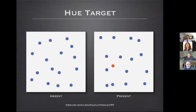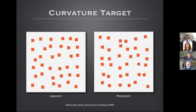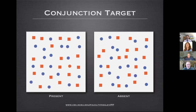Here's a simple example of a hue target—absent on the left, present on the right. If you increase the number of elements, it doesn't get harder to find the target. Here's a curvature target where everything is the same hue, and experiments show it's not only pre-attentive but as easy to detect as the hue target. From a visualization standpoint, you might think: great, I have two visual features—hue and curvature—so I can display two attributes simultaneously. But when you search for a red circle among elements that vary in both hue and curvature, it becomes dramatically harder. You resort to serial scanning—looking at one block of elements after another.